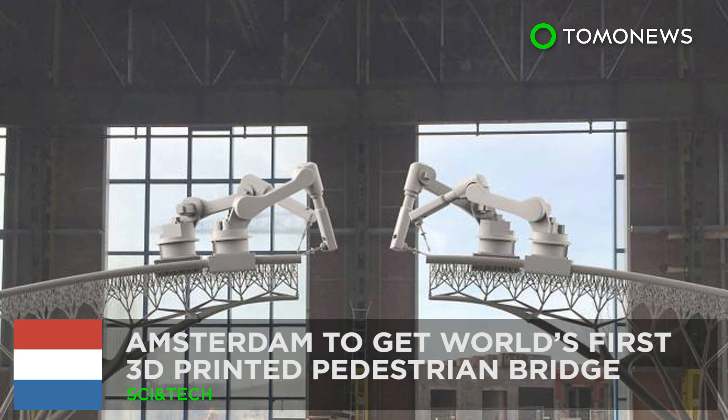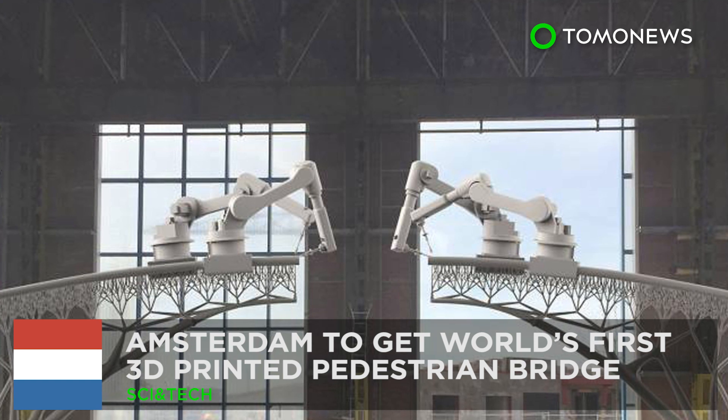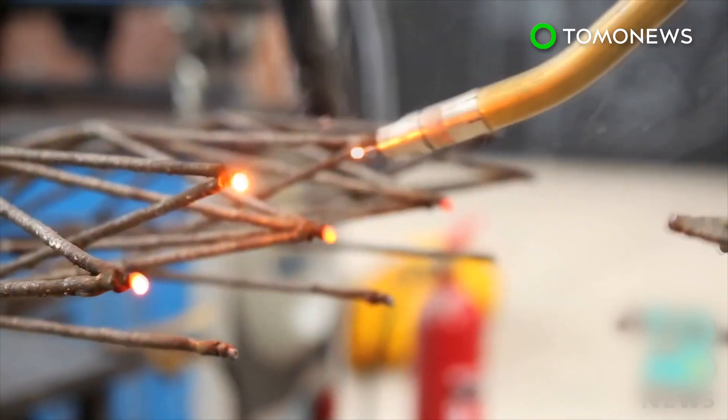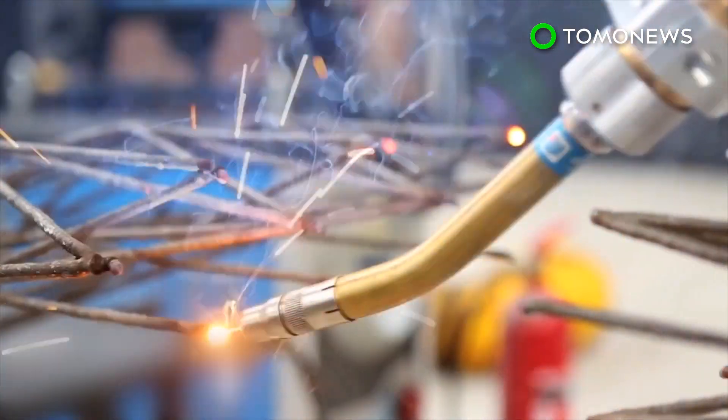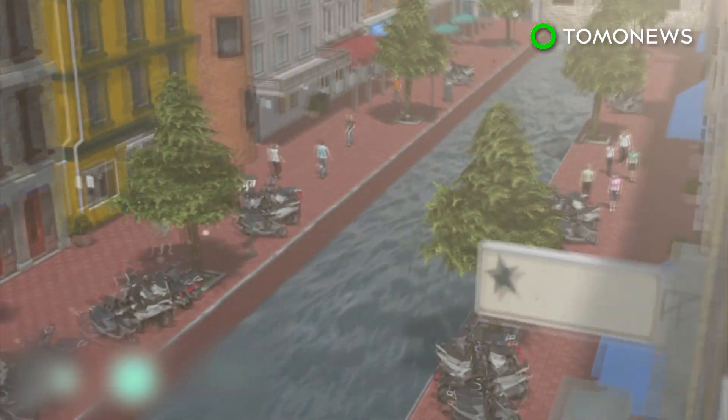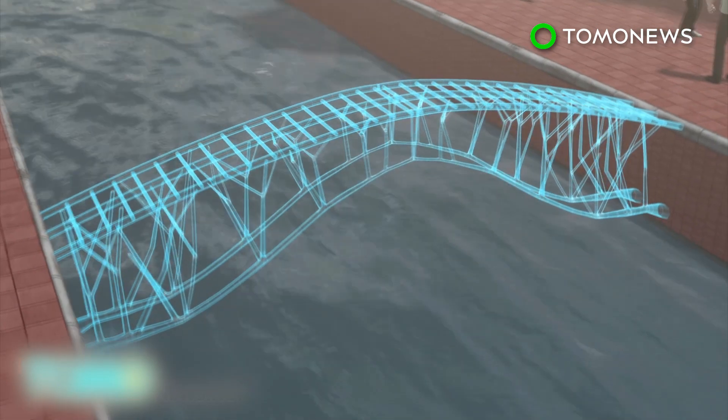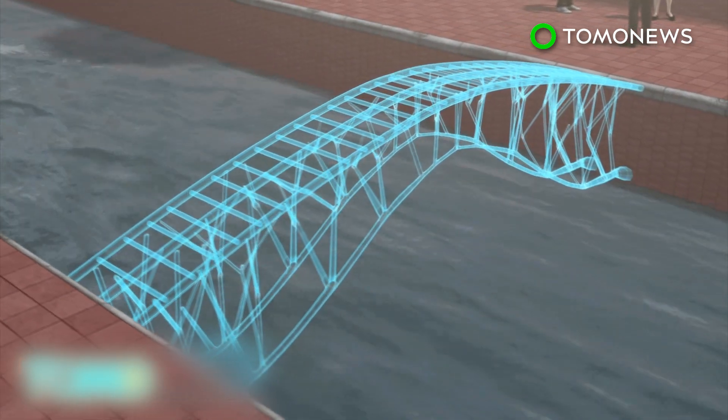Amsterdam to get the world's first 3D-printed pedestrian bridge. A Dutch startup company has announced plans to draw a steel structure over water in Amsterdam. Dutch company MX3D plans to print a bridge across an Amsterdam canal with a project set to begin in September.